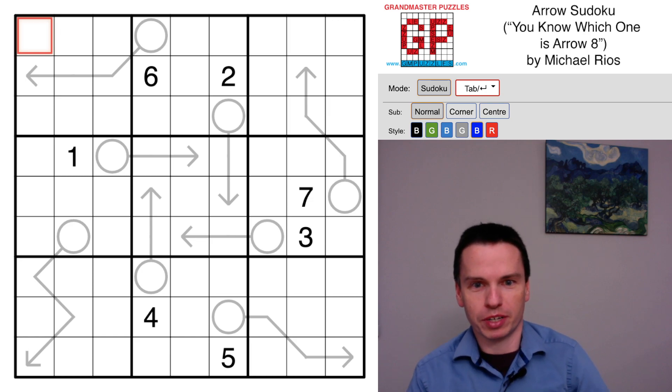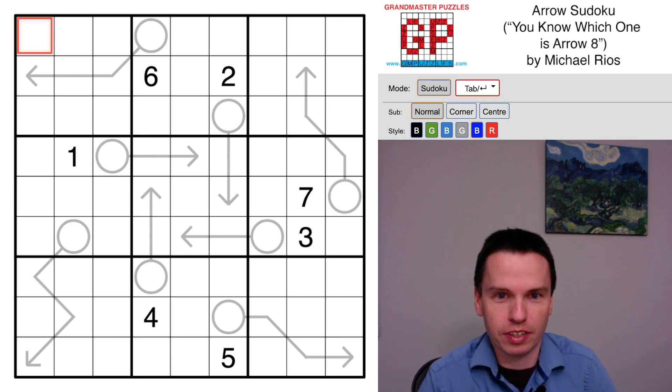We're here to solve this Arrow Sudoku by Michael Rios, and it's telling me that you know which one is arrow 8. I'm not sure at the start I know that, but maybe let's puzzle out what the title means, and then we'll go through the solve. I do see that there are eight arrow shapes in the grid, so something about labeling the arrows might make sense, and I actually see that there are seven numbers in the grid one through seven, and there's an arrow that doesn't have a number near it.